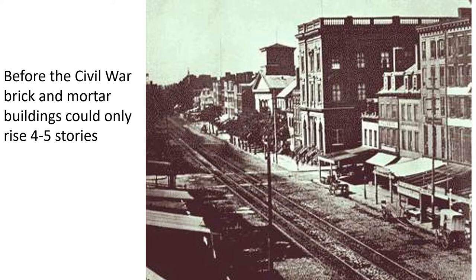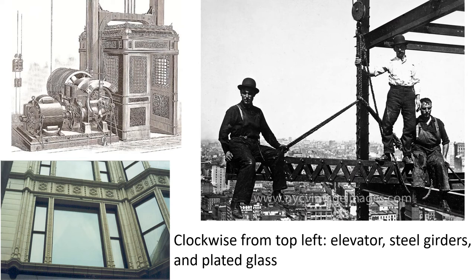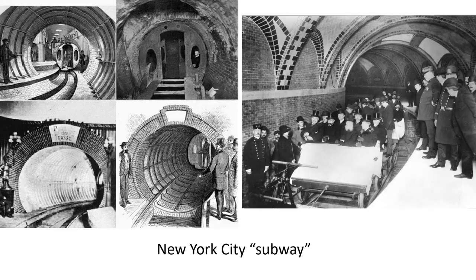Before the Civil War, brick and mortar buildings could only rise about four or five stories because the weight of the brick would crush the one below, and you wouldn't want to walk up too many flights of stairs. With steel and electricity, the Industrial Revolution in the late 19th century saw cities building up more — you get things like elevators, steel girders, and plated glass. All the new urban density meant it was difficult to get people around, and not surprisingly you started seeing things like the New York City subway in the early 20th century.